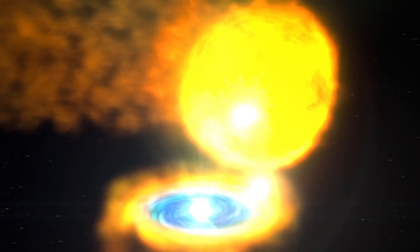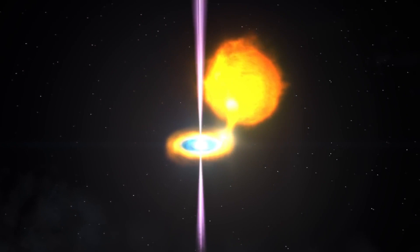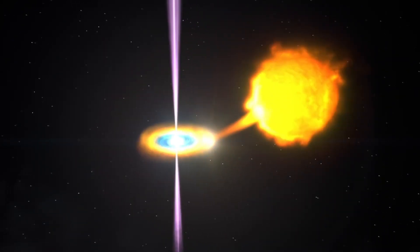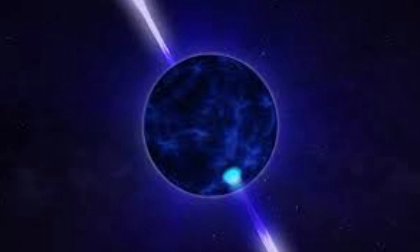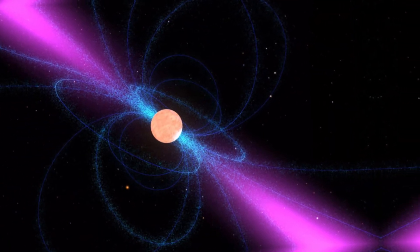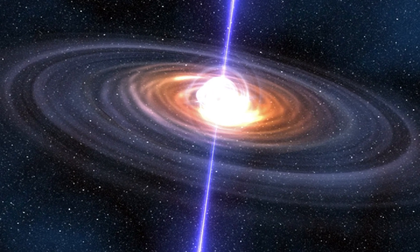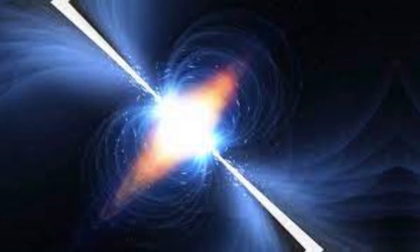Pulsars are remnants of massive stars that have exploded as supernovae, leaving behind ultra-dense cores. They can have a mass of up to two times that of the Sun, but a radius of only about 10 kilometers. They can rotate up to hundreds of times per second, and their magnetic fields can be billions of times stronger than Earth's. Pulsars are a fascinating and mysterious phenomenon that challenge our understanding of the extreme states and the evolution of matter.